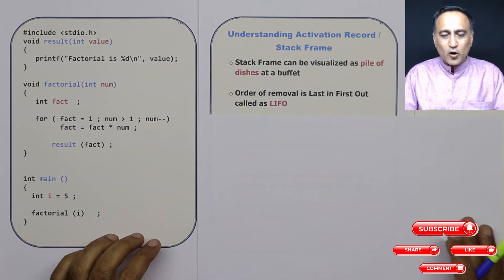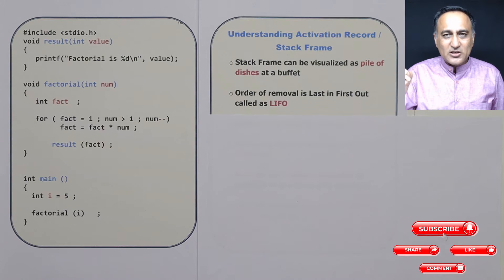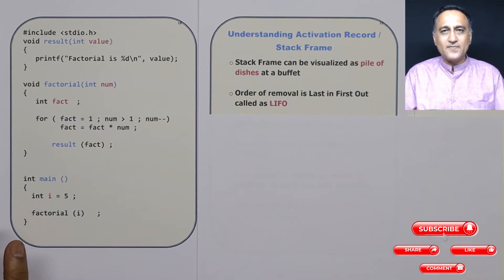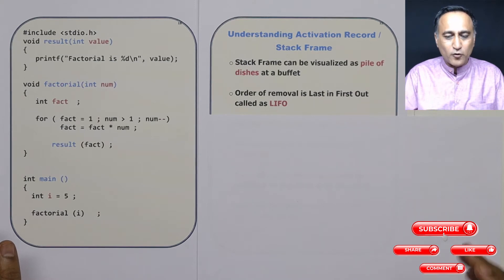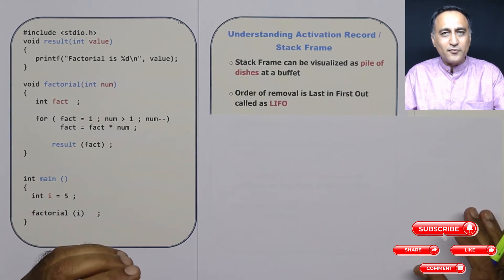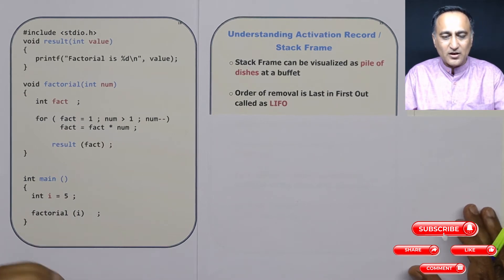The order of removal is: the last item placed is the item taken out first. That is why it is known as last-in-first-out, or LIFO. This LIFO method is used to manage the stack frame or activation records.